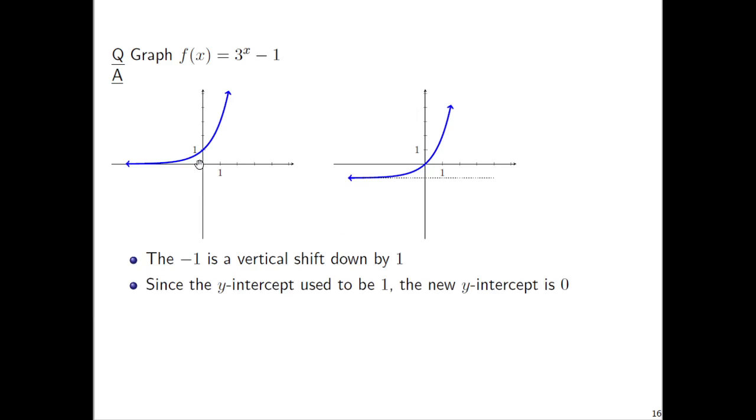And then if we look at this minus 1 that's going to shift the graph down one unit. So keep the axes where they are but take all the points in blue and shift them down one unit. Well this y-intercept that was at 1 should go down one unit as well. So this minus 1 is a shift down by one unit. The y-intercept used to be at 1 so it makes sense that the y-intercept is now at 0.